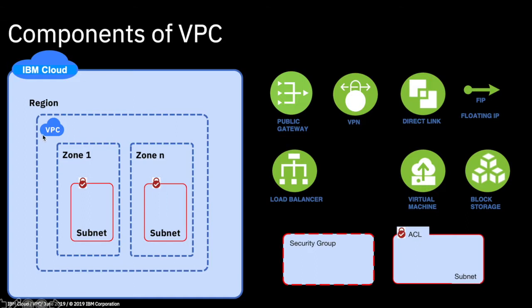You create your Virtual Private Cloud within a region, so the first thing you do is select the region where you want your VPC to be. You then create subnets, which actually live within a zone — a particular data centre. You can have multiple subnets within a zone, or multiple zones each owning subnets. What you cannot have is a subnet that spans across zones.